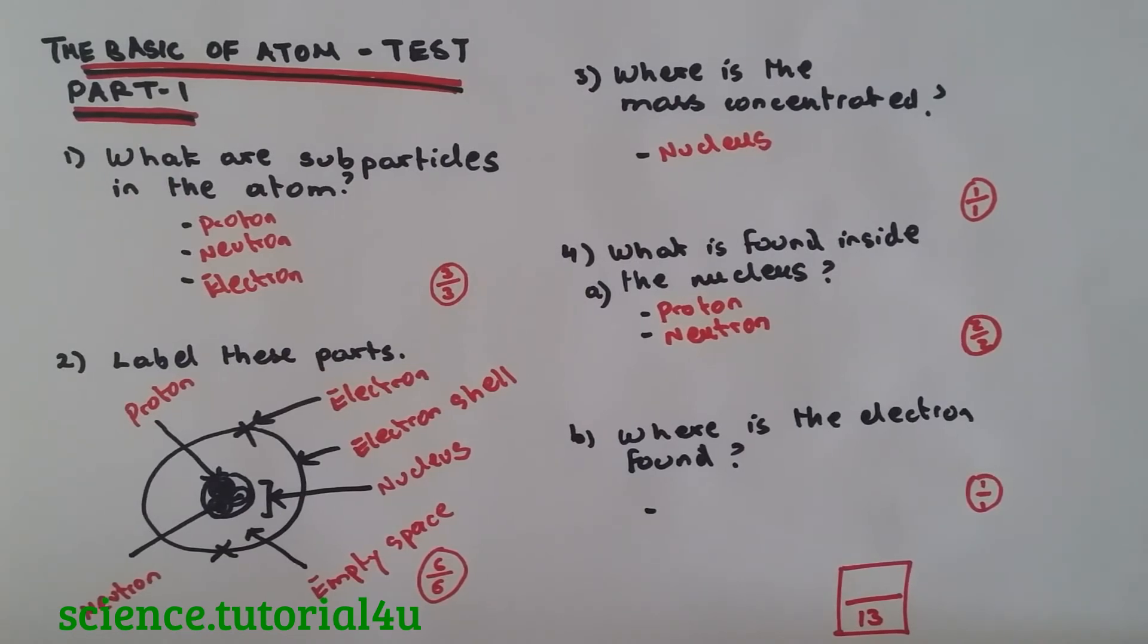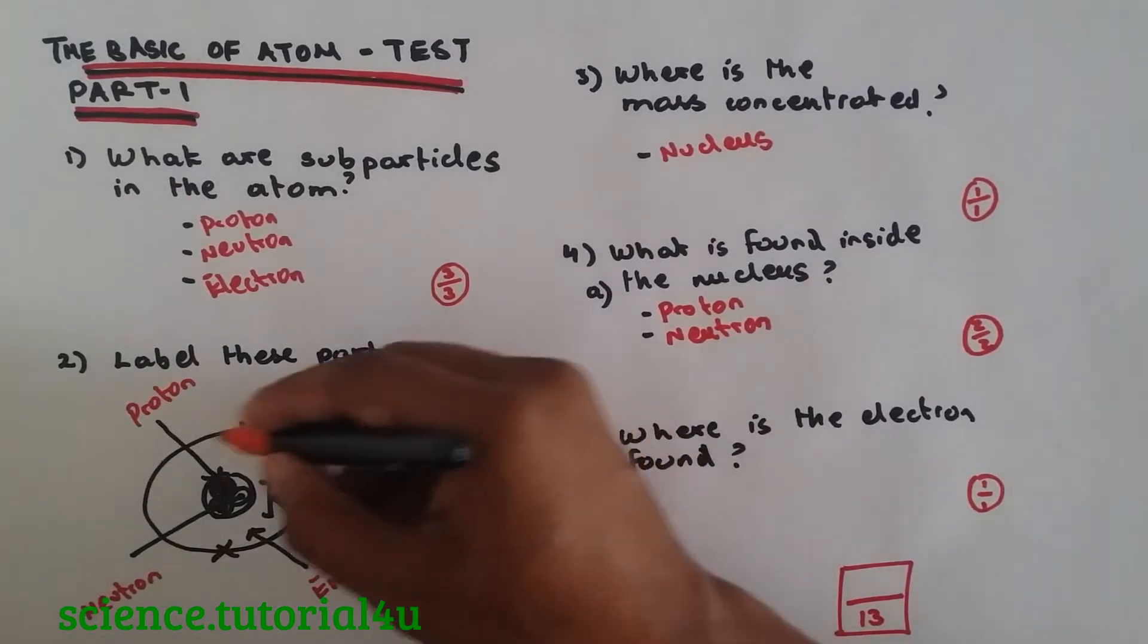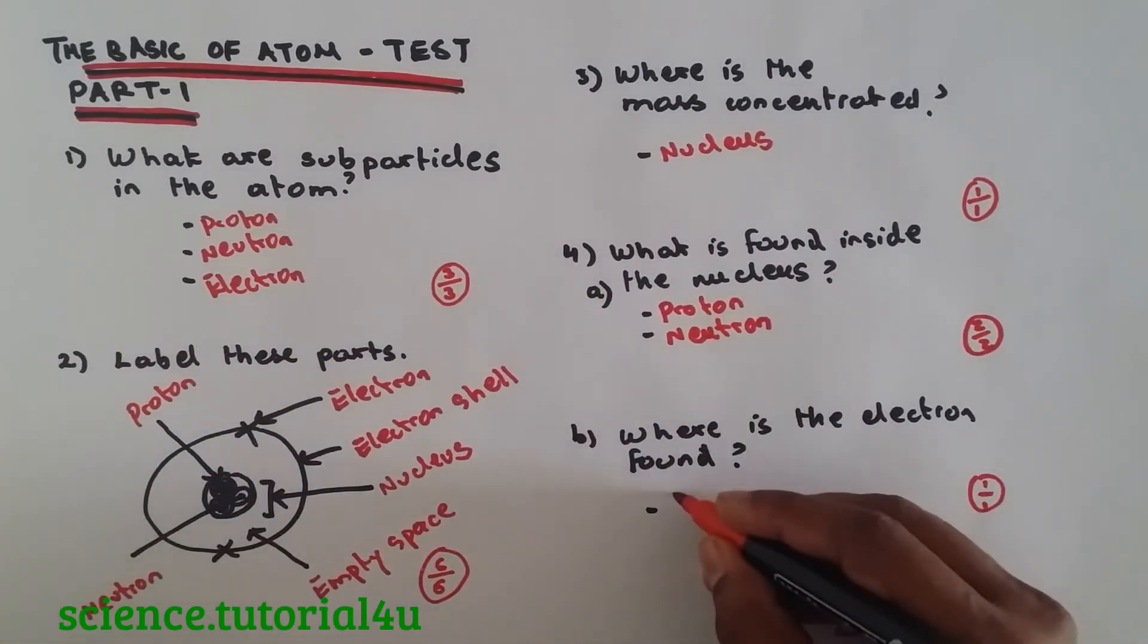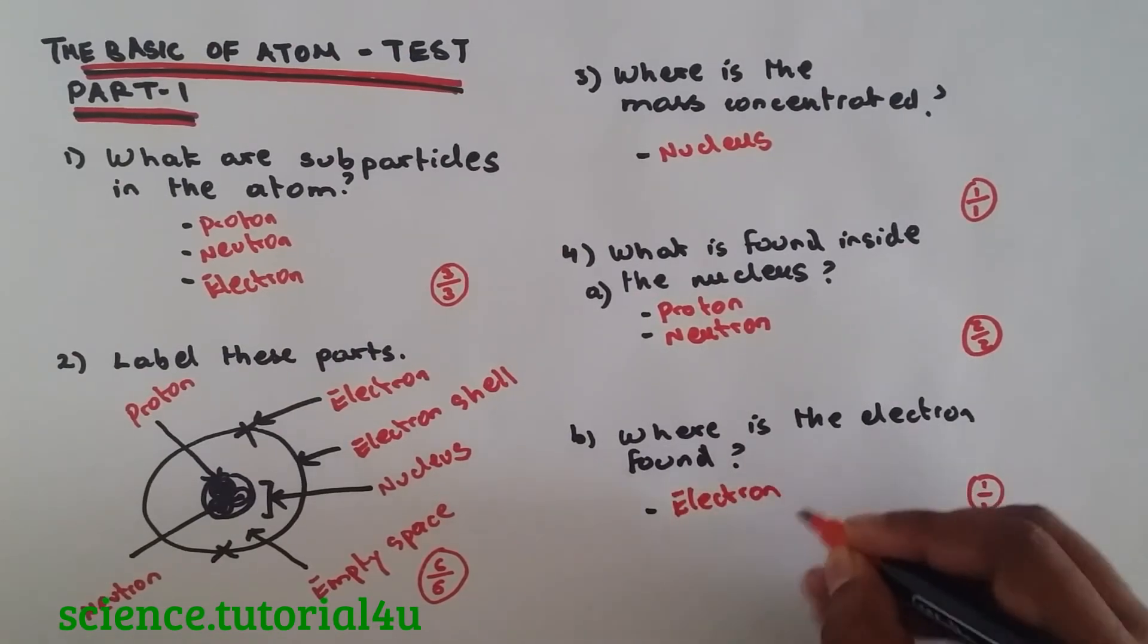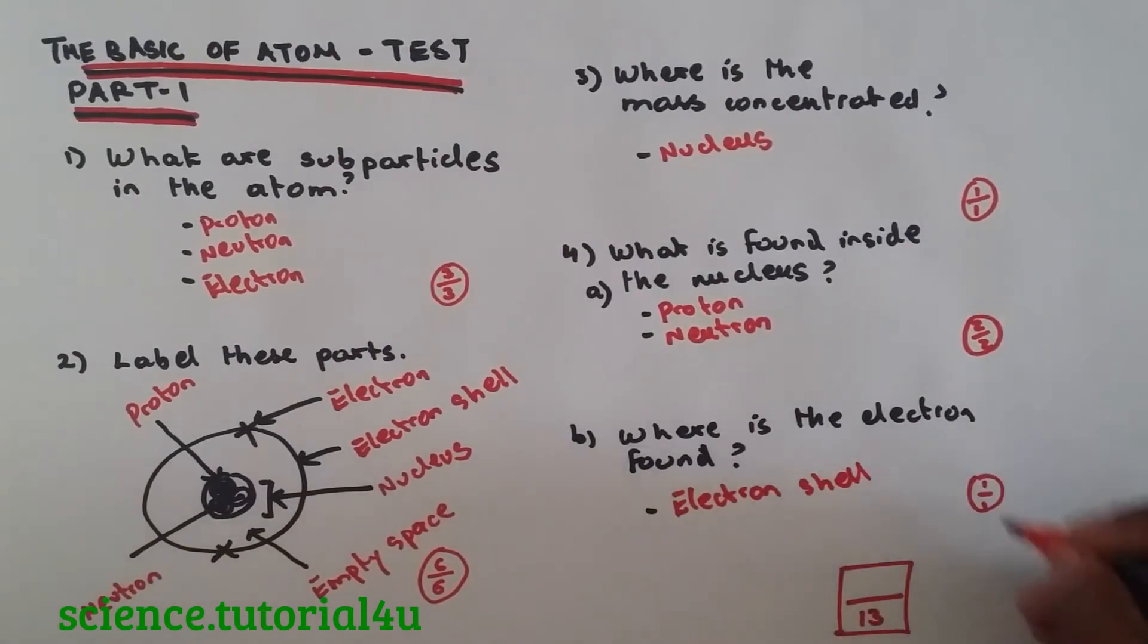Where is the Electron found? The Electron is found, obviously, on the Electron Shell. Alright, that's one out of one.